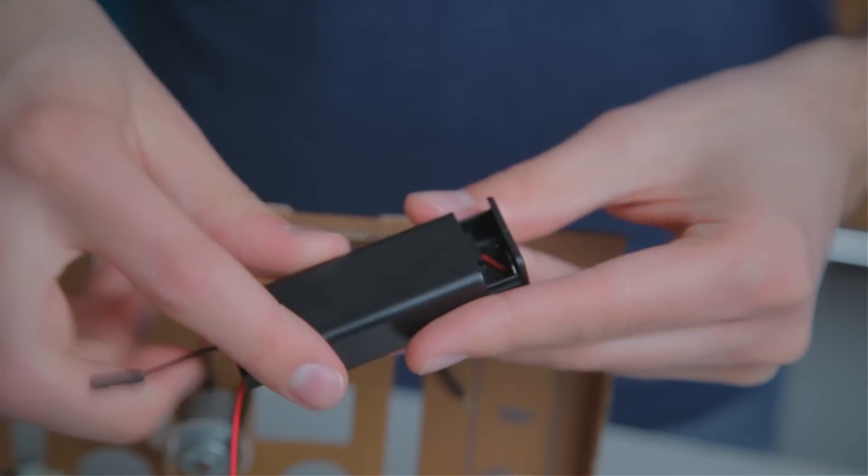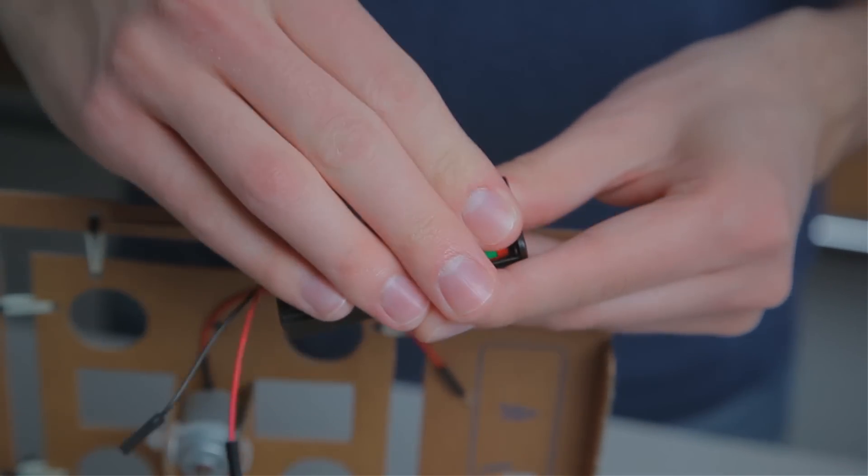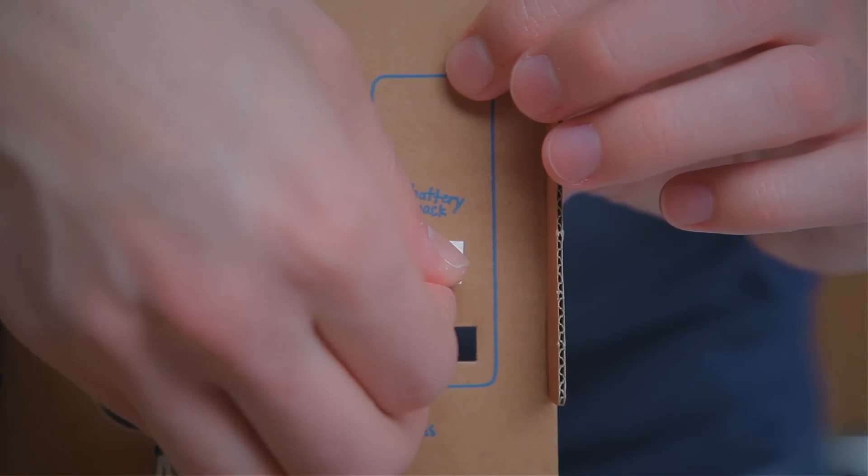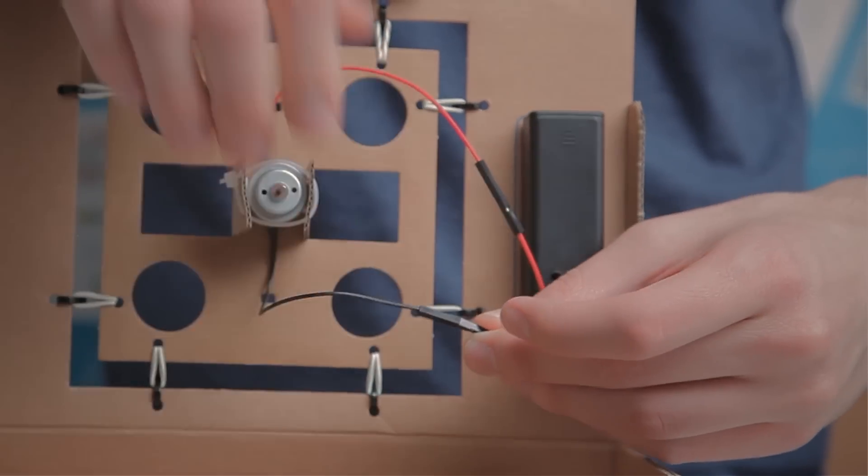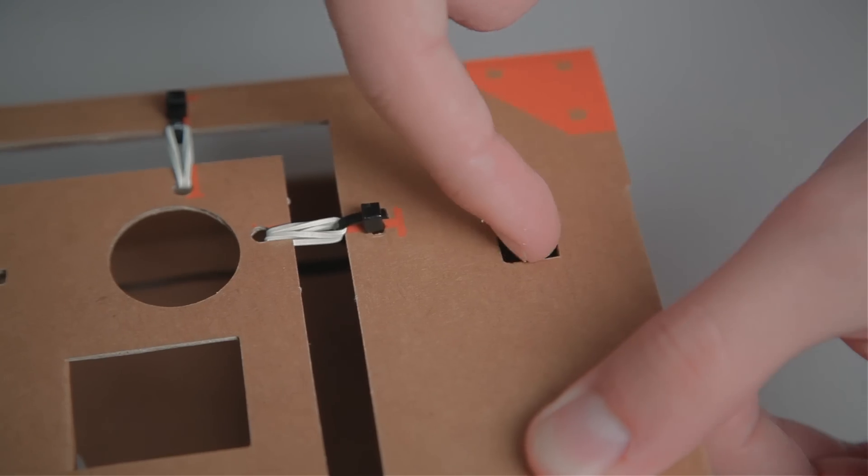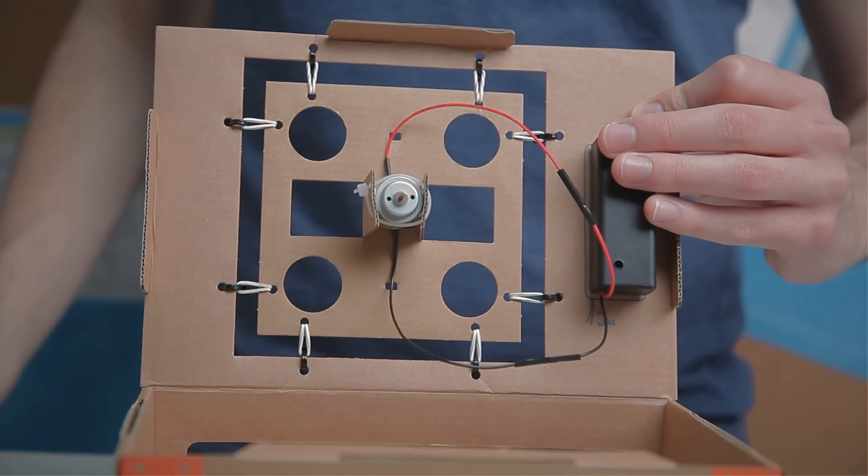Put a battery into the battery pack and then use one square of double stick foam to secure it to your shake table near the switch. Now slide the wires together and give it a test. If your motor doesn't turn on, make sure the wires are connected tightly.